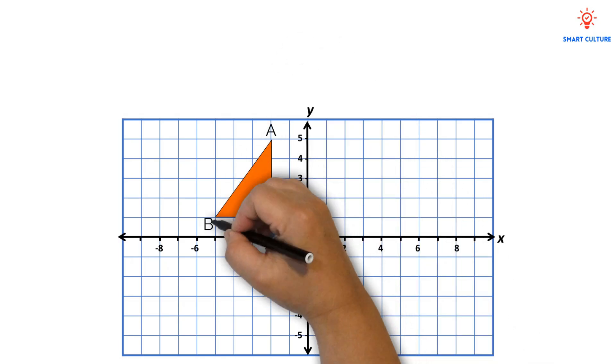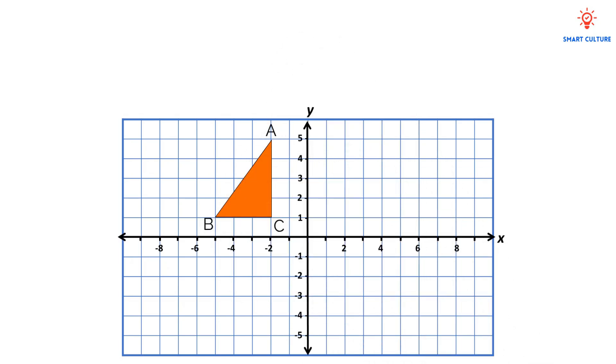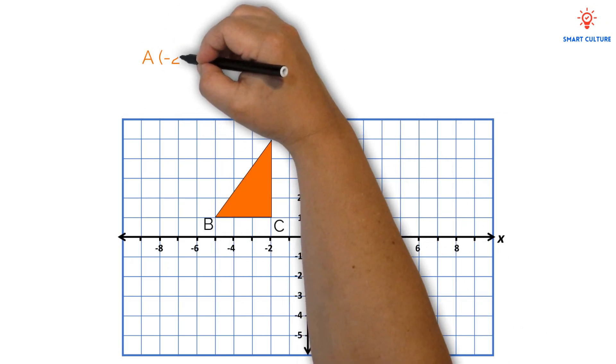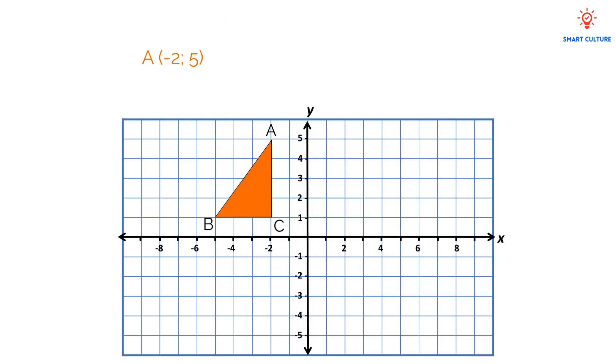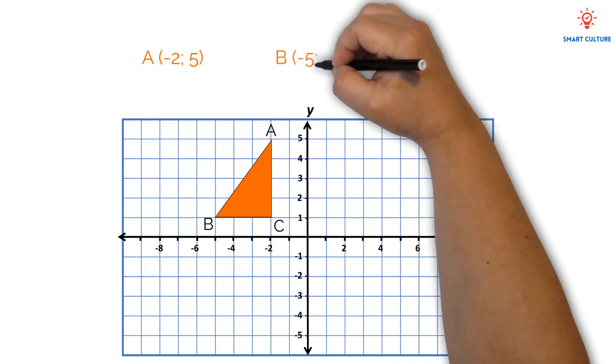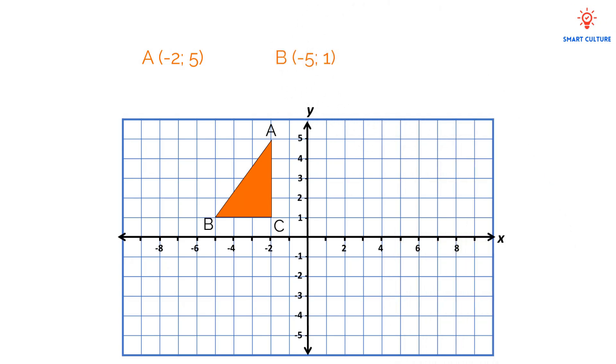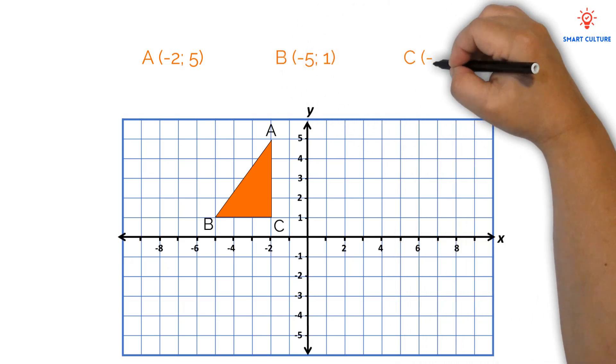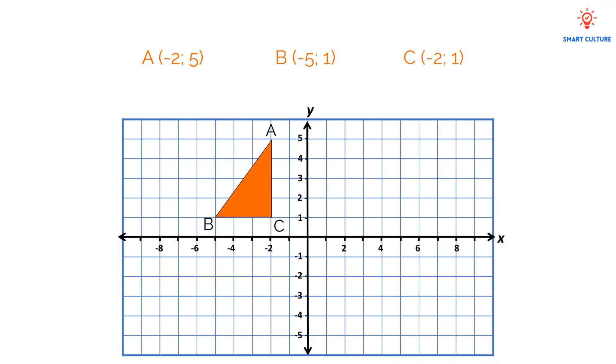What are the coordinates of this triangle? A is negative 2 and 5. B is negative 5 and 1. C is negative 2 and 1.